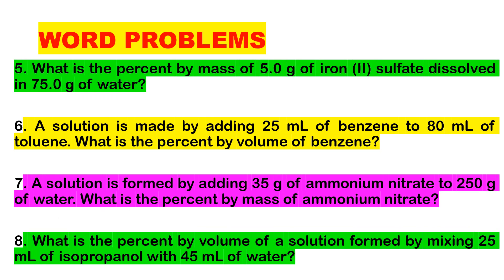Number five: what is the percent by mass of 5.0 grams of iron sulfate dissolved in 75.0 grams of water? Number six: a solution is made by adding 25 ml of benzene to 80 ml of toluene — what is the percent by volume of benzene?